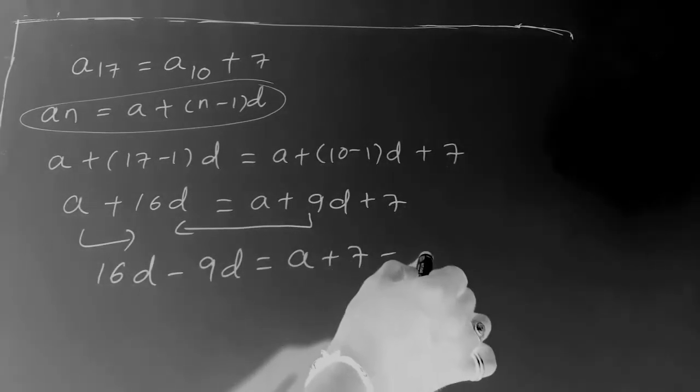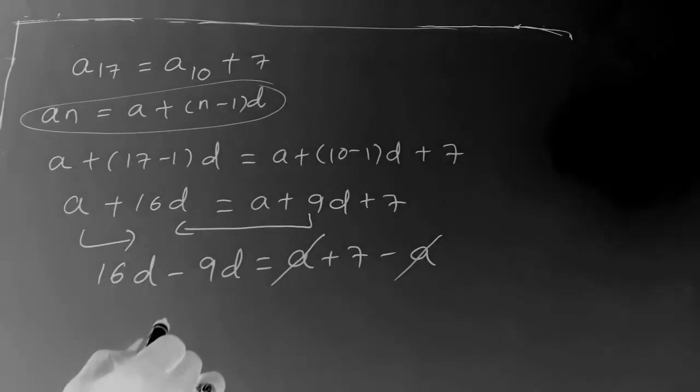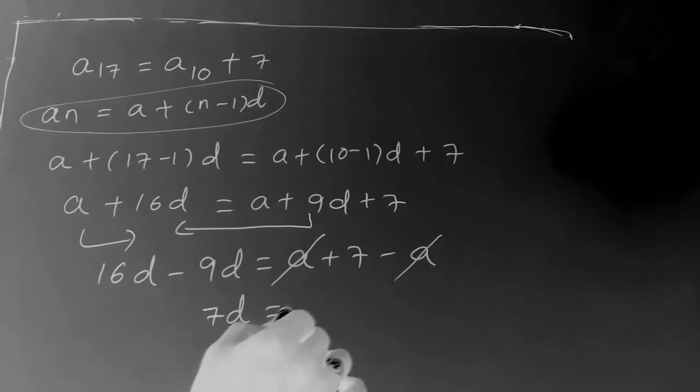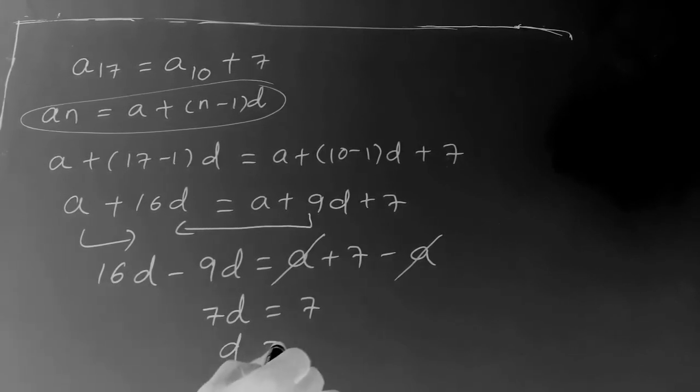Plus a minus a, both going to cancel. 16 minus 9 is nothing but 7. 7 times d equal to 7 here. So here 7, it is in multiplication, it goes to division. So 7 by 7, that is nothing but 1. Therefore, the common difference of the given AP series is nothing but 1.